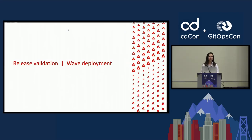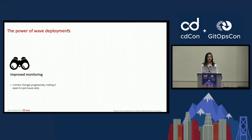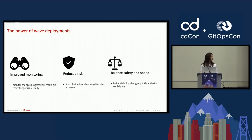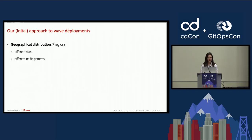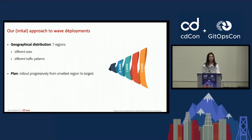We leveraged wave deployments to this purpose. Wave deployments allow for progressive monitoring of changes, making it easier to spot issues early. They limit blast radius because when negative effects are present, only a part of the traffic is affected rather than all of it. Despite the reduced risk, they still keep a good balance between safety and speed because you can deploy changes frequently while minimizing the chances of a major issue. Our service is globally distributed across seven regions that differ in size and traffic pattern, and we decided to split deployment into waves, grouping regions with similar sizes and rolling them out progressively from smallest to largest.